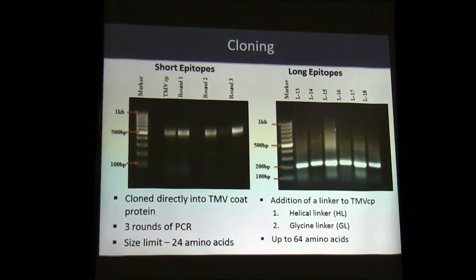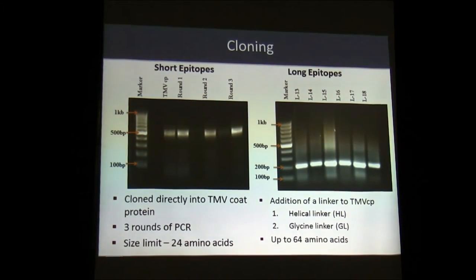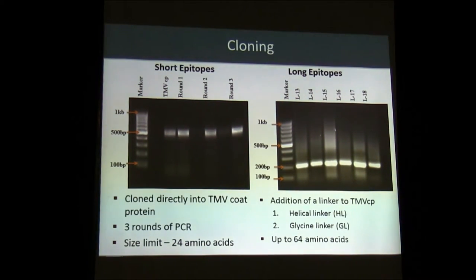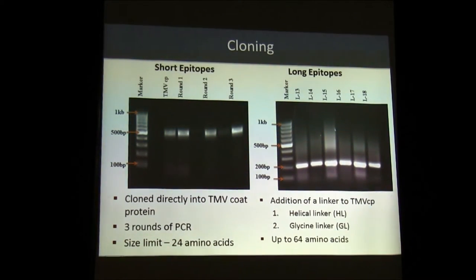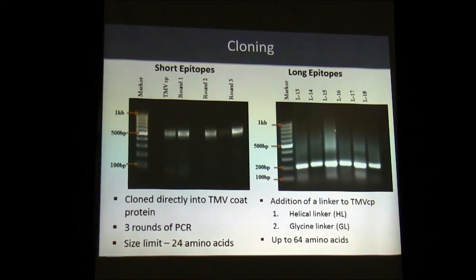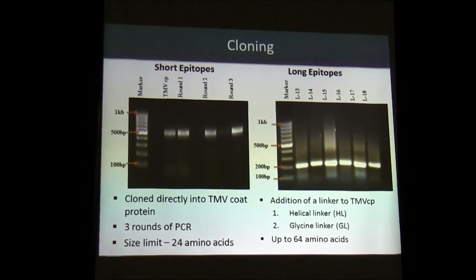There are two methods of introducing epitopes to the coat protein of tobacco mosaic virus. Initially we were restricted to 24 amino acids as these were cloned directly to the coat protein — anything larger than 24 amino acids inhibited the folding of the coat protein and you would not get viral particles made. The second method involves attaching a linker to the coat protein, which allows your epitope to hang on the side and thus there is less hindrance to the folding of the tobacco mosaic coat protein. Using this method we've managed to attach epitopes as large as 64 amino acids.